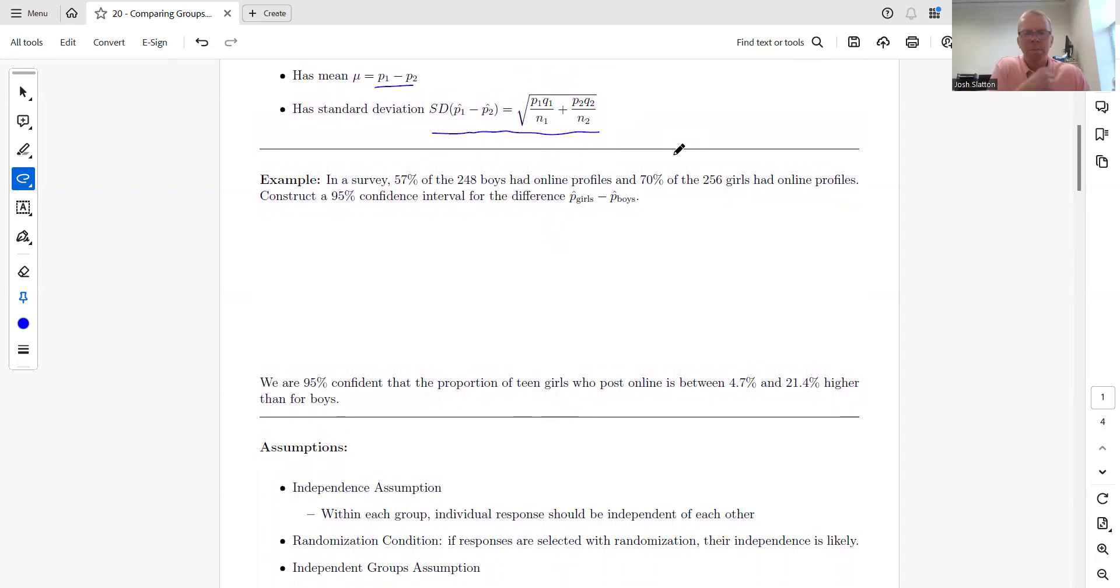We're going to talk about confidence intervals, and the next one we'll get into hypothesis testing. For this example, 57% of 248 boys had online profiles, 70% of 256 girls had online profiles. Construct a 95% confidence interval for the difference. Pay attention here because it does matter: girls minus boys, not vice versa. With confidence interval, we can do this directly on the calculator; we don't need to worry about this formula, although we will once we get to testing.